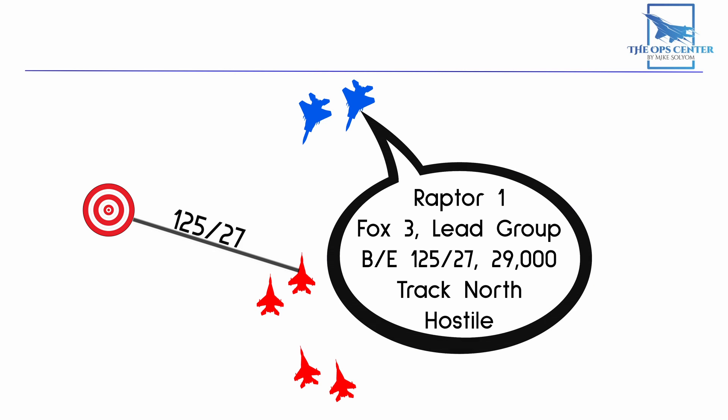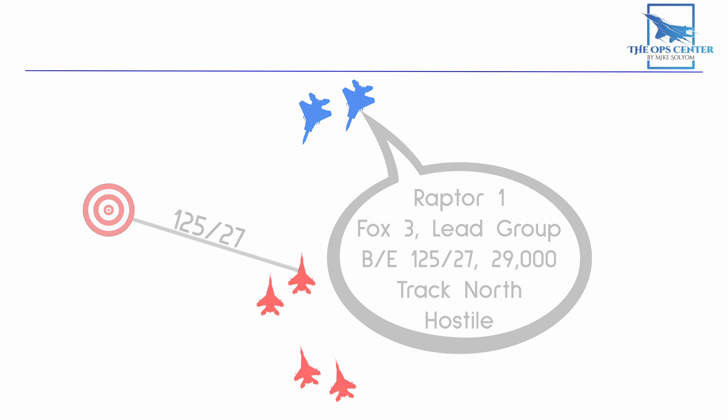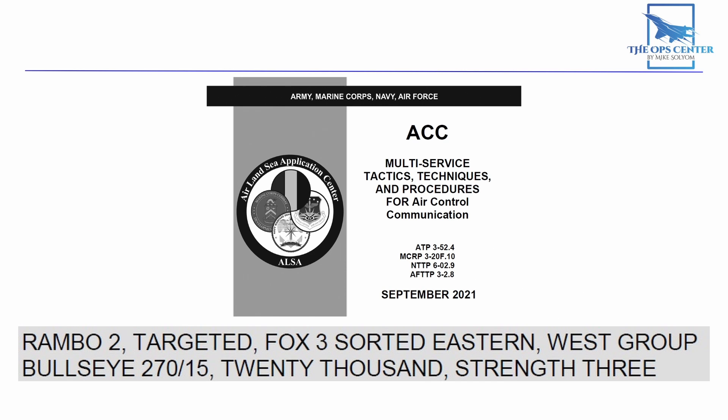Shot communication can also be combined with targeting and sorting, so it could look like this: 'Rambo 2, Targeted, Fox 3, Sorted Eastern, West Group, Bullseye 270-15, 20,000, Strength 3.' That's a lot of words, but it makes it absolutely clear what's happening. There should be no question about who is shooting and what the target is.